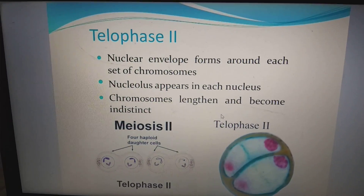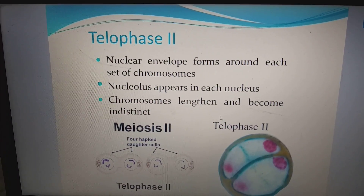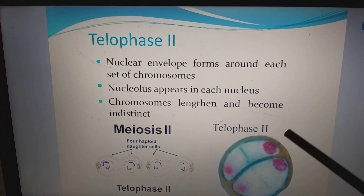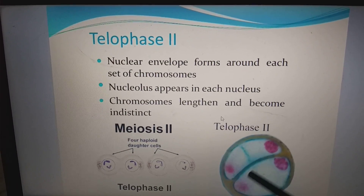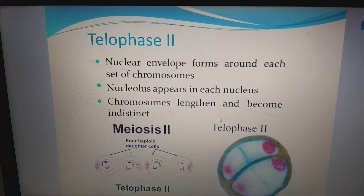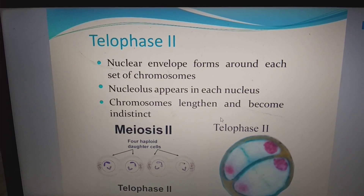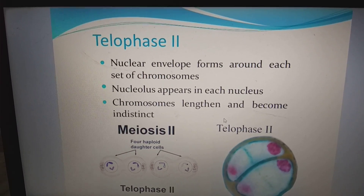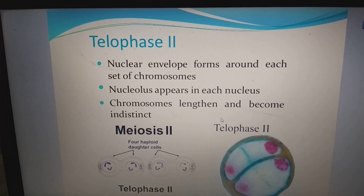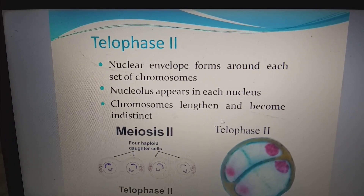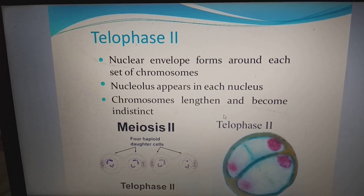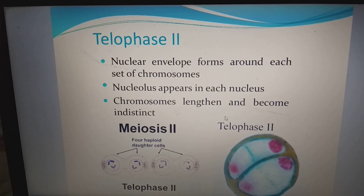In telophase II, a nuclear envelope forms around each set of chromosomes, the nucleolus appears in each nucleus, and chromosomes lengthen and become indistinct — meaning decondensation of chromosomes occurs to form chromatin material.